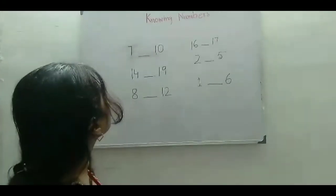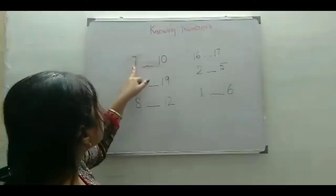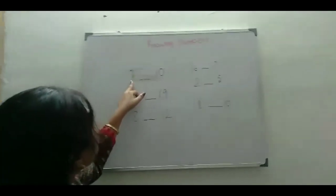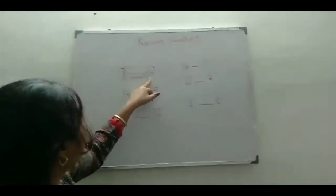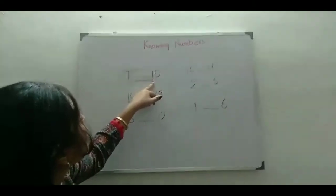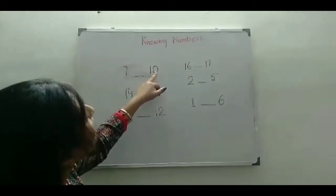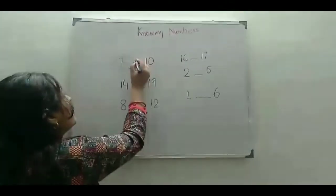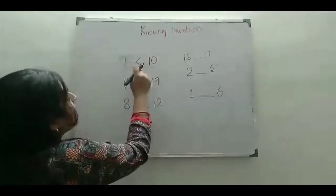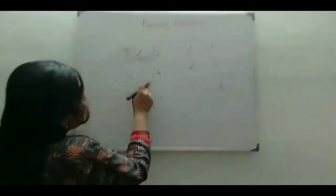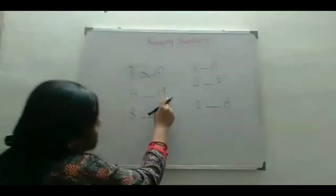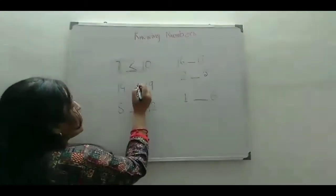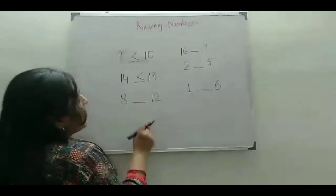Okay children, now you can see the first number is 7 and the next one is 10. We know 7 is less than 10. First we say 7, then we count 10, so 7 is less than 10. The sign should be the less than sign: 7 less than 10. Next one is 14 and 19. 14 is always less than 19, so the sign should be the less than sign.